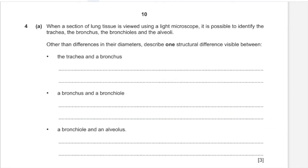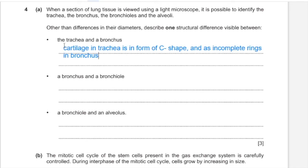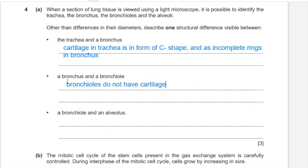When a section of lung tissue is viewed using a light microscope, it is possible to identify the trachea, bronchus, bronchioles, and alveoli. One structural difference between trachea and bronchus: cartilage in the trachea is in the form of C-shaped rings, whereas in the bronchus it is present as incomplete rings. A bronchus has cartilage whereas a bronchiole does not. A bronchiole has ciliated epithelium whereas an alveolus is made only of squamous epithelium cells.